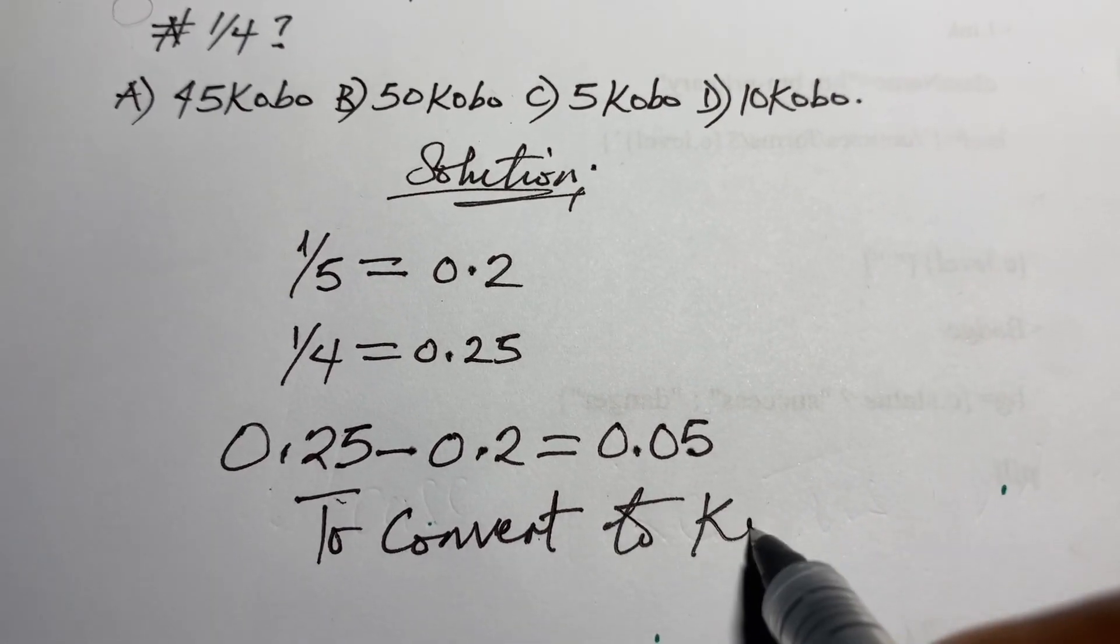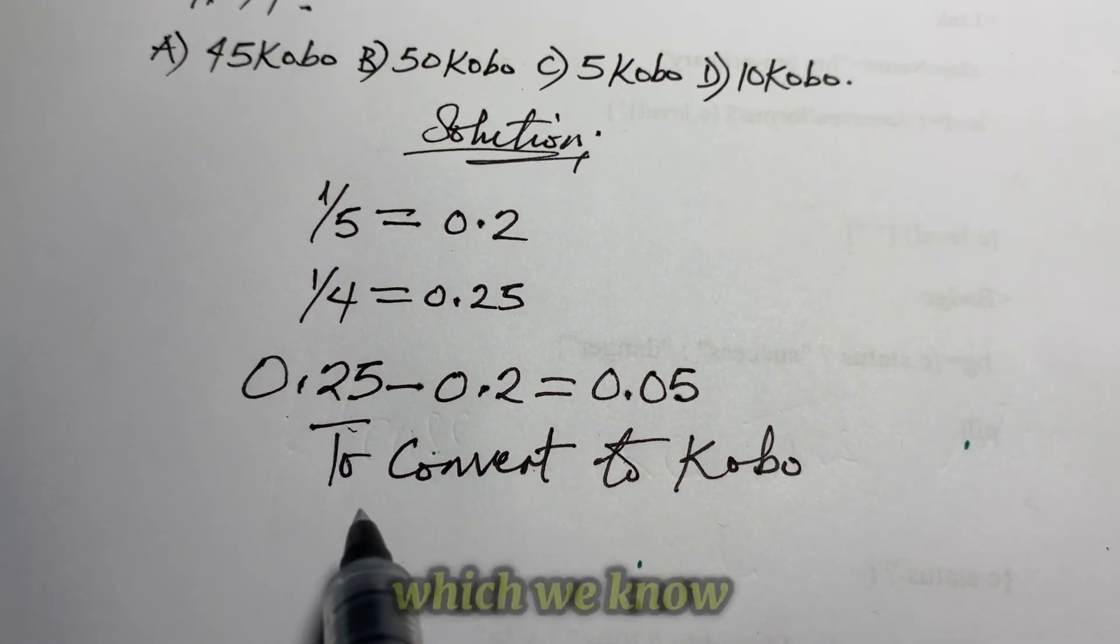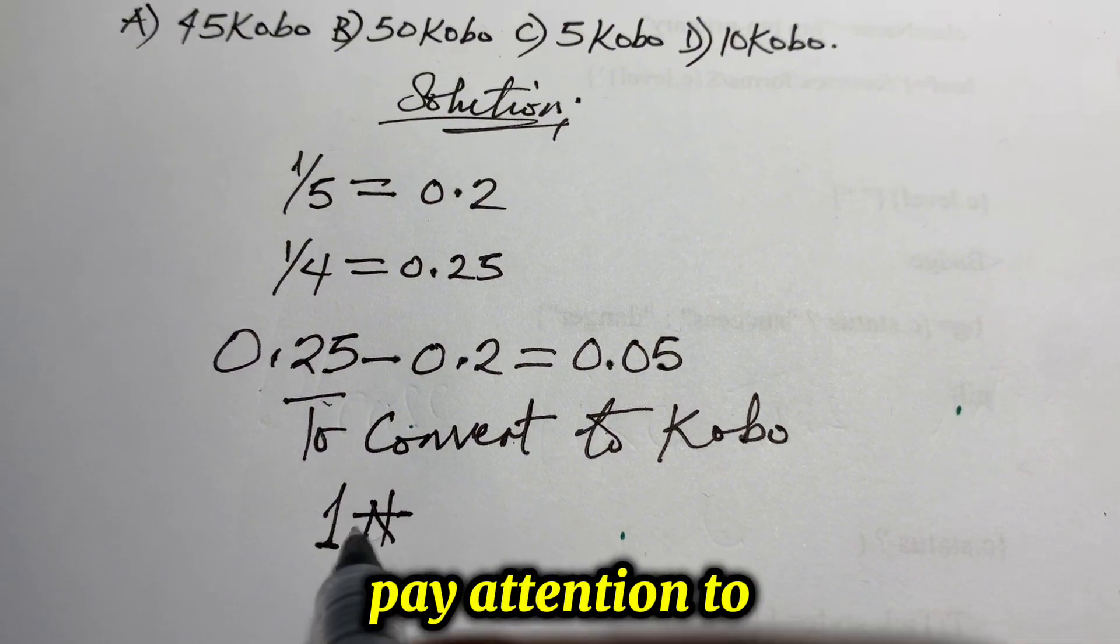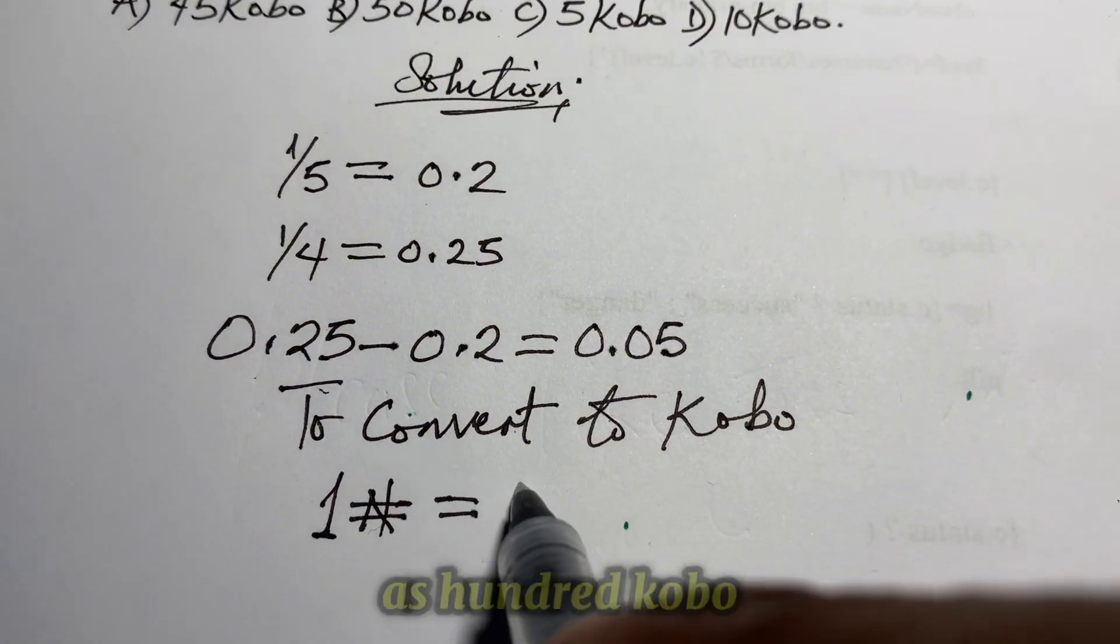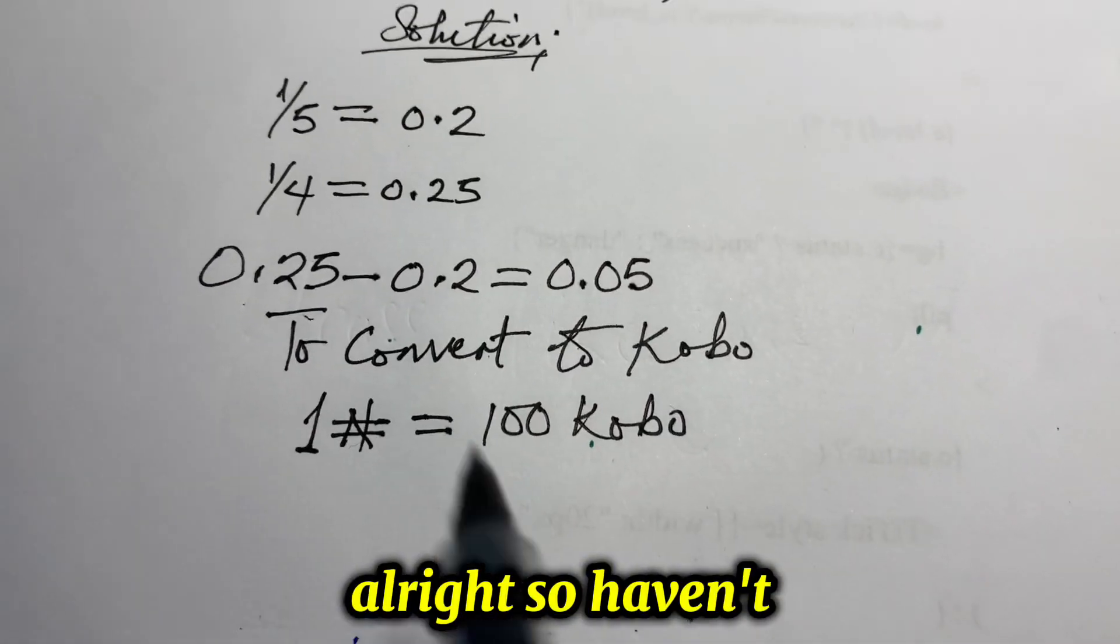Which we know that 1 Naira, if you don't know, please just pay attention to this. 1 Naira is equivalent to, or is the same thing as 100 kobo. Alright, so having known this, then for us to get this in kobo, we have to say,